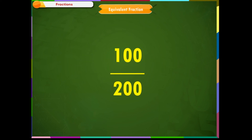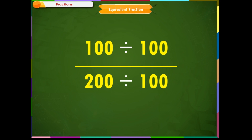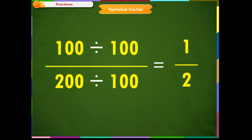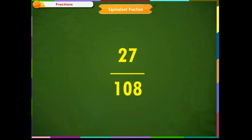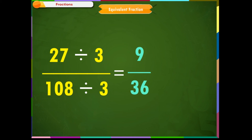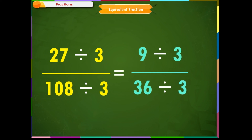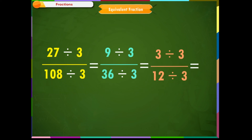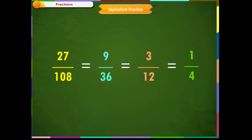Similarly, if there is a fraction one hundred by two hundred, we can find smaller equivalent fractions by dividing. One hundred divided by one hundred, and two hundred divided by one hundred, equals one half. We just have to find the common factor of both the numerator and denominator and divide them by it. For example, twenty-seven by one hundred and eight: the common factor is three, so we divide to get nine by thirty-six. Three is again a common factor of nine and thirty-six, giving three by twelve, and dividing by three again gives one by four. All these fractions are equivalent fractions.